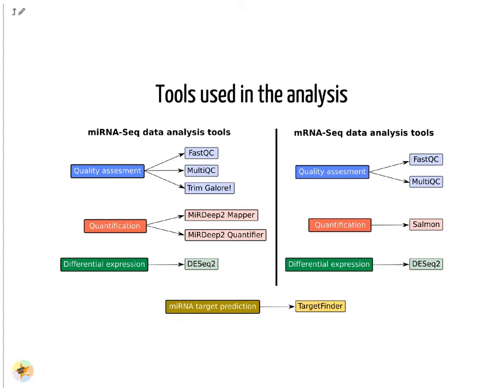Trimgalore is a wrapper tool around Cutadapt and FastQC to consistently apply quality and adapter trimming on FASTQ files. To carry out microRNA quantification, we will use two modules of the miRDeep2 tool: miRDeep2 mapper and miRDeep2 quantifier. We will use Salmon for mRNA quantification. For the differential expression analysis, we will use DESeq2, a package for differential expression analysis of count data based on the negative binomial distribution. Finally, we will use the TargetFinder tool for microRNA target prediction.